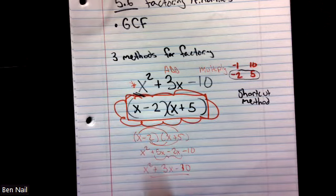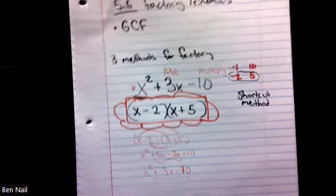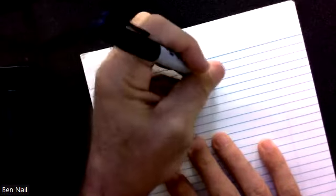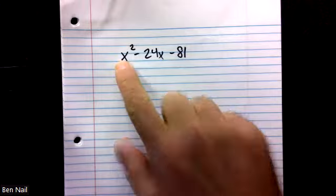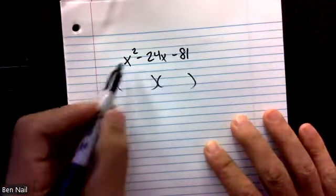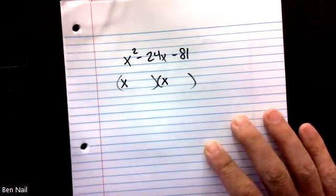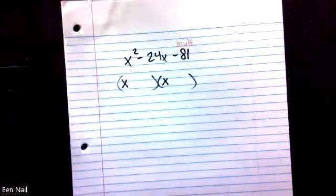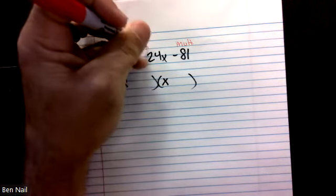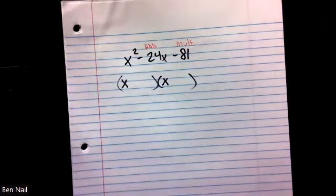I'm going to do a few more examples with no number in front of the x squared — these will all factor by the shortcut method. My Math Lab likes to use bigger numbers, so we'll do something a little more complicated. Same game: no number in front of the x squared, so we can use the shortcut. X squared is x times x, and we're specifically looking for what two numbers multiply to get negative 81, but also add to get negative 24.